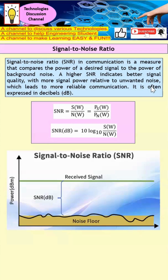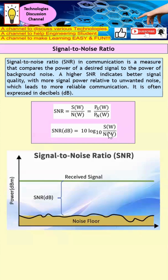Signal-to-Noise Ratio is often expressed in dB. When the signal strength is greater than the noise power, the SNR in dB will be a positive number. When the signal strength is less than the noise power, the SNR in dB will be a negative number. When the SNR equals 0 dB, the signal power and noise power are exactly the same.